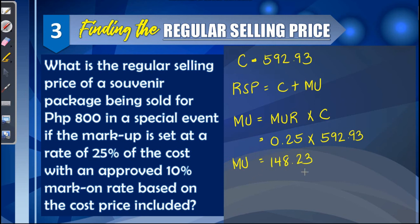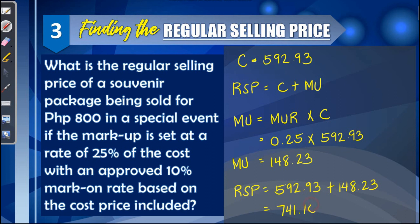Since we now know the markup, we can find the regular selling price: RSP = cost + markup = 592.93 + 148.23 = 741.16. So the regular selling price of the souvenir package is 741.16 pesos.